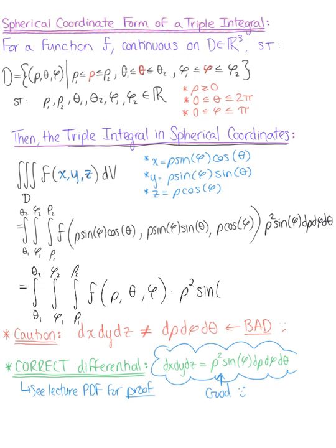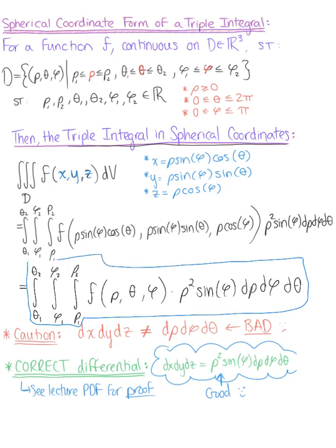multiplied by the differential rho squared, sine of phi, d rho, d phi, d theta. And so this is our iterated, or one of the iterated integrals for a spherical coordinate triple integral.